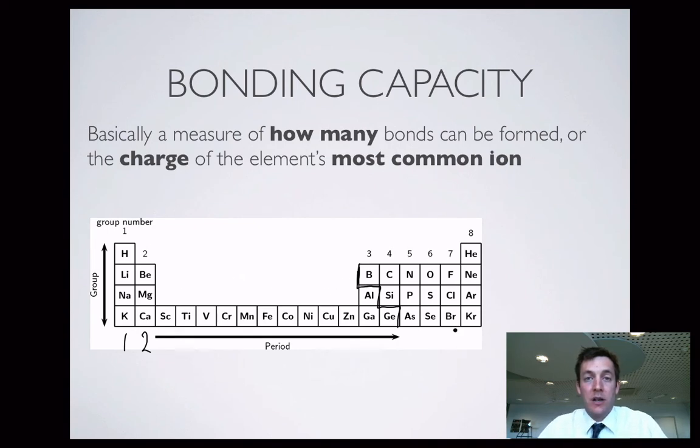In group 7, if we're looking at ionic bonding capacities, these atoms form 1 minus ions, so their ionic bonding capacity is 1. These form 2 minus ions, so their ionic bonding capacity is 2. And these ones form 3 minus ions, so their ionic bonding capacity is 3. And as we know, these elements here don't really form ionic compounds, so they don't have an ionic bonding capacity so much.